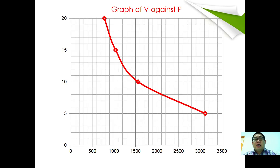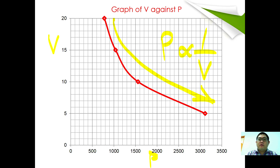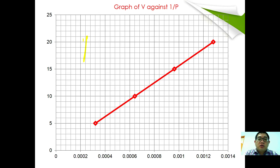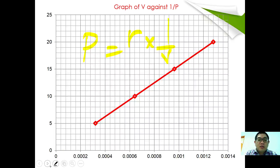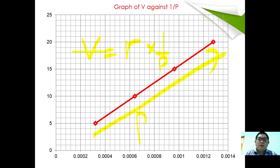This is a graph of volume against pressure — it shows a negative (inverse) curve, demonstrating that P is inversely proportional to volume. When volume is plotted against 1/P, the graph shows a positive gradient — a directly proportional relationship — where V = R × (1/P), and R here is the proportionality constant.